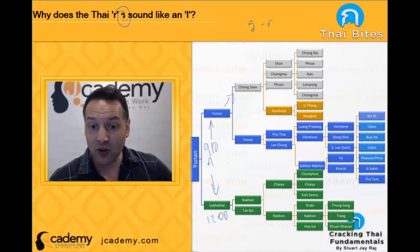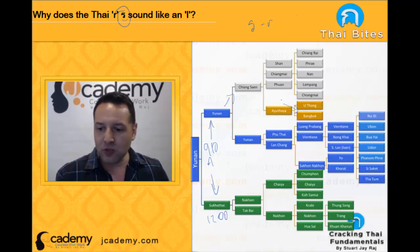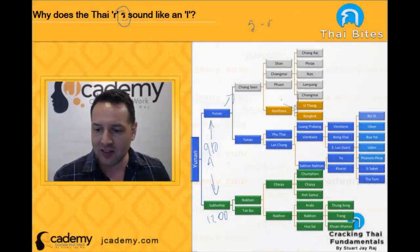and then we notice the tones almost going in an opposite direction than this branch, and they come down. Many things happen to the consonants. Then we come down into this Ayutthaya branch, and I'll show you, and then we're interested here then in the Ayutthaya and the Bangkok.